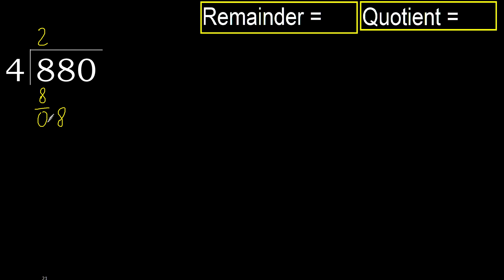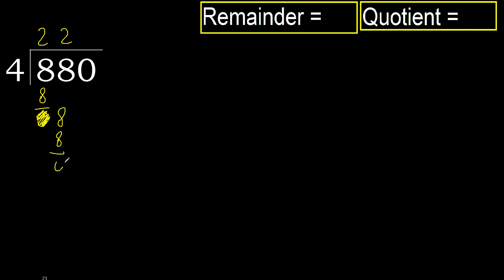Next. Bring down 0 on this side: 8. 4 multiplied by 2 is 8. Subtract next. Eliminate 0.